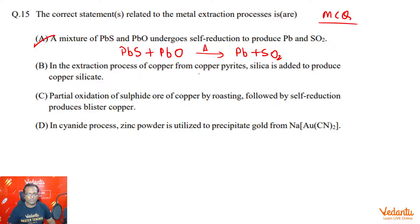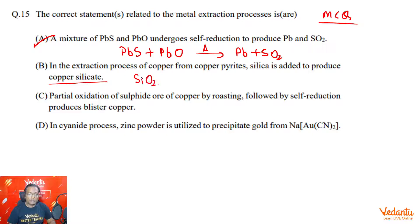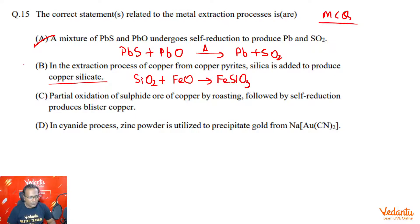In the extraction of copper from copper pyrites, silica is added to produce copper silicate. Silica is indeed added, but not to remove copper as copper silicate — it is added to remove ferrous oxide as ferrous silicate slag. Therefore, this option is incorrect.